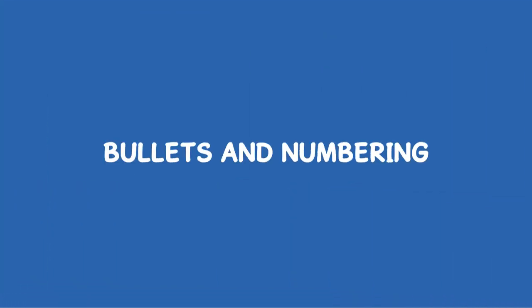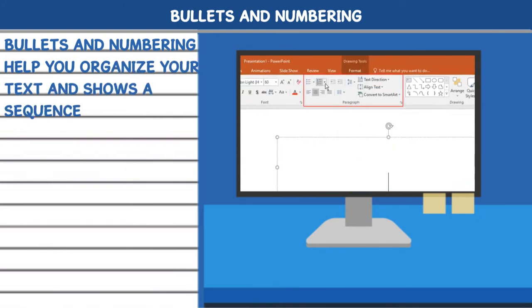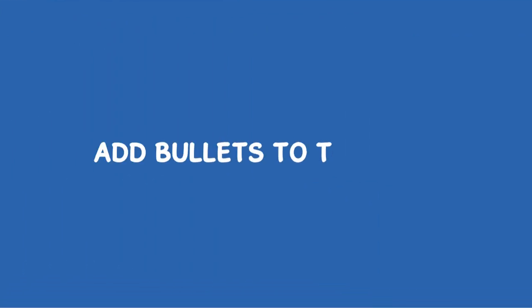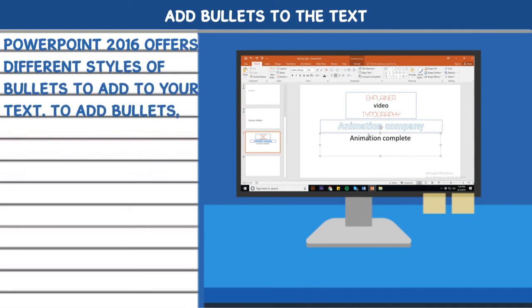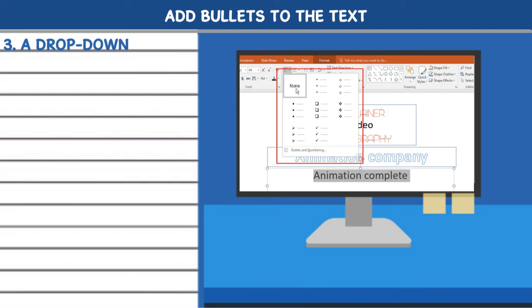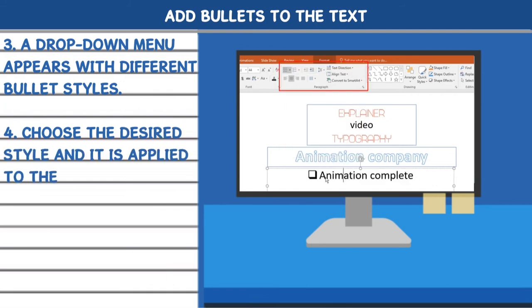Bullets and numbering. Bullets and numbering help you organize your text and show a sequence display of points in the presentation. Add bullets to the text. PowerPoint 2016 offers different styles of bullets to add to your text. To add bullets, follow these steps. 1. Select the text. 2. On the home tab, click on Bullets in the paragraph group. 3. A drop-down menu appears with different bullet styles. 4. Choose the desired style and it is applied to the text.